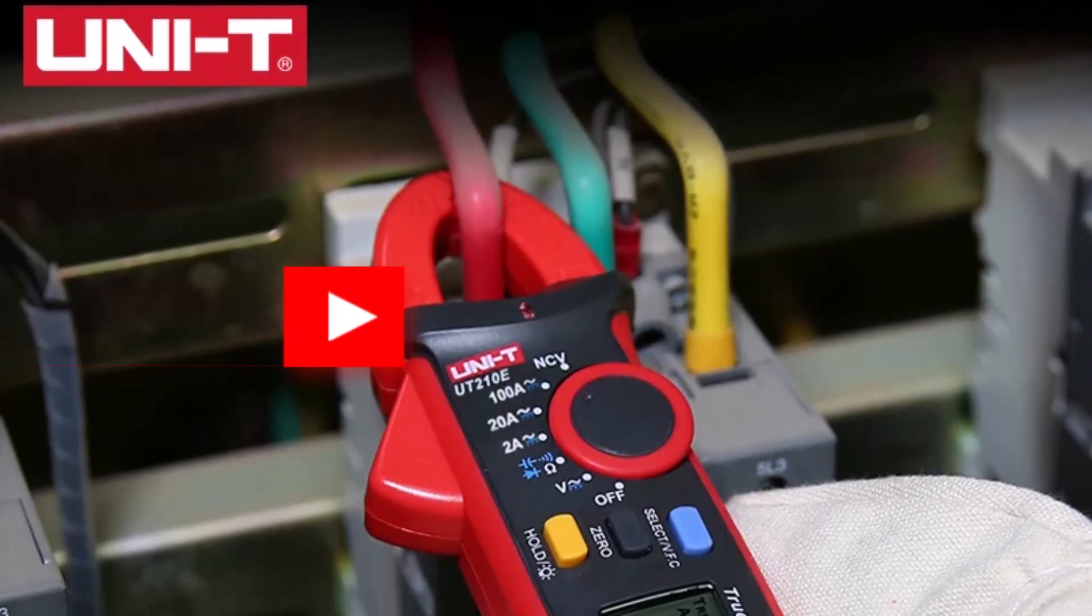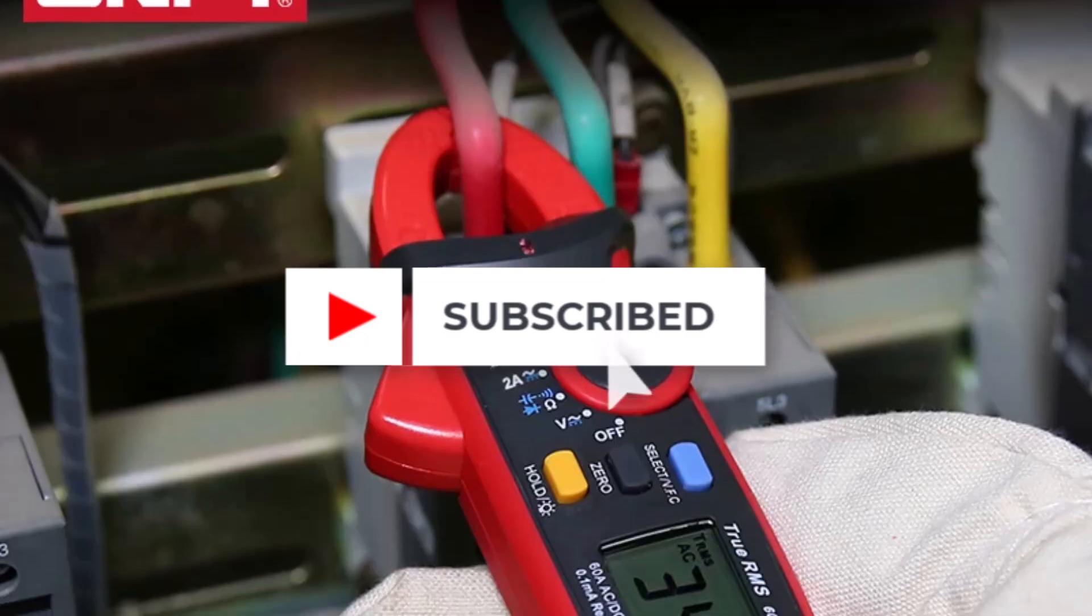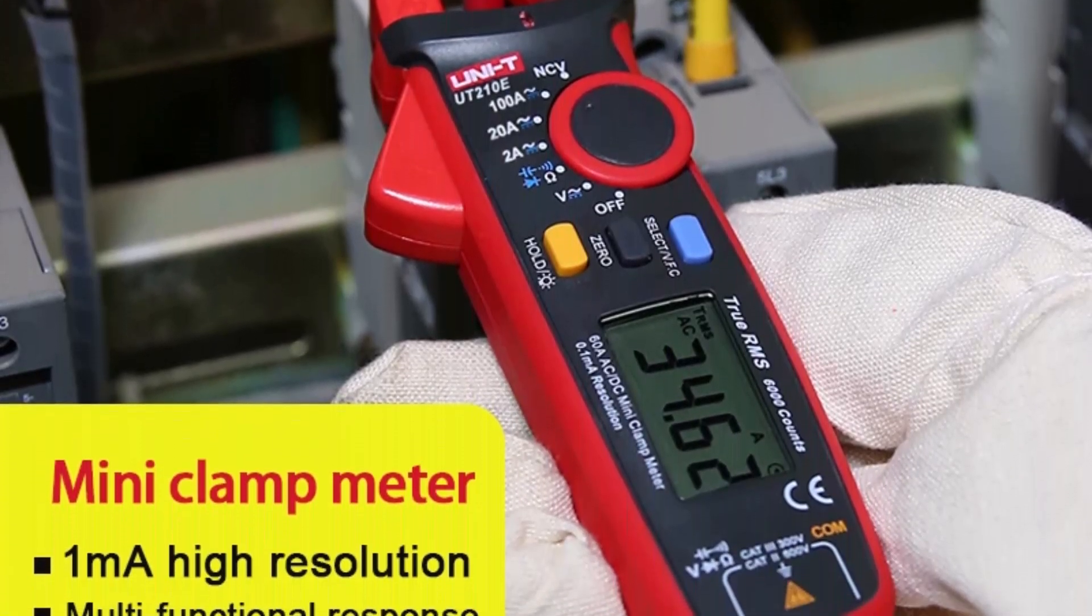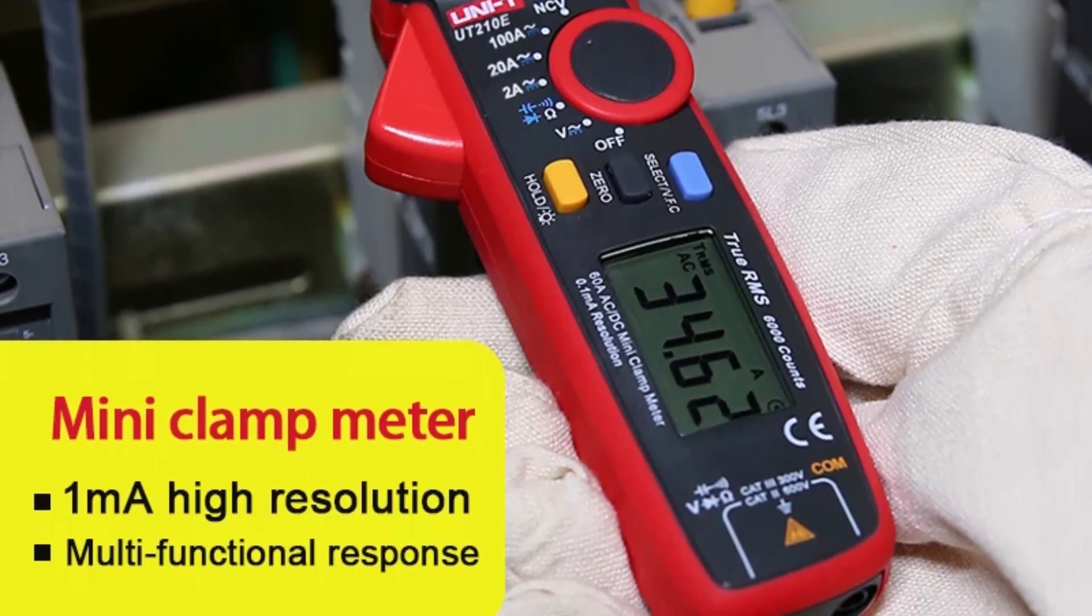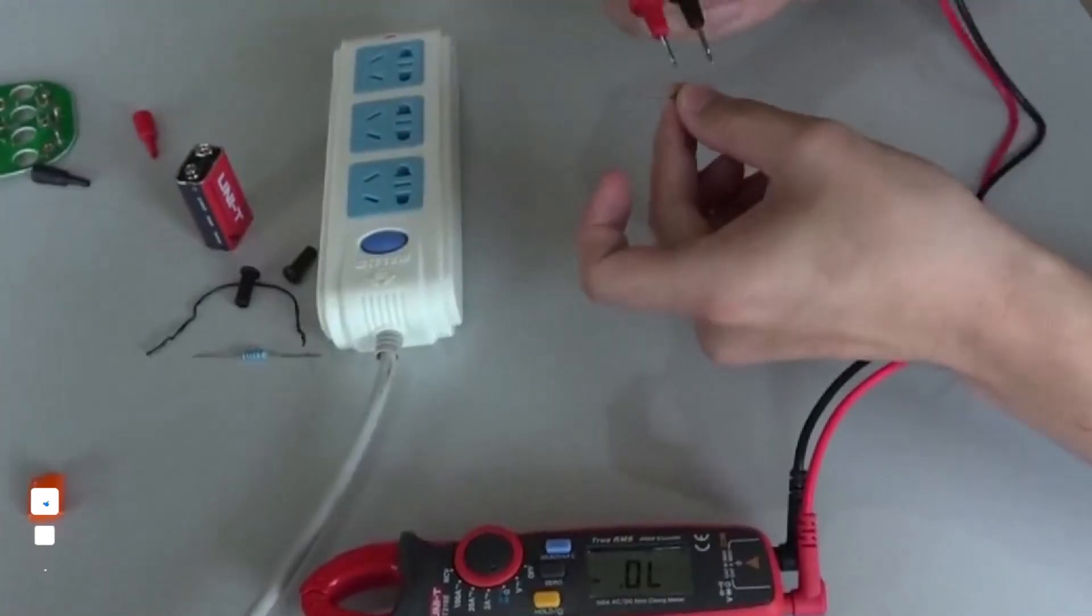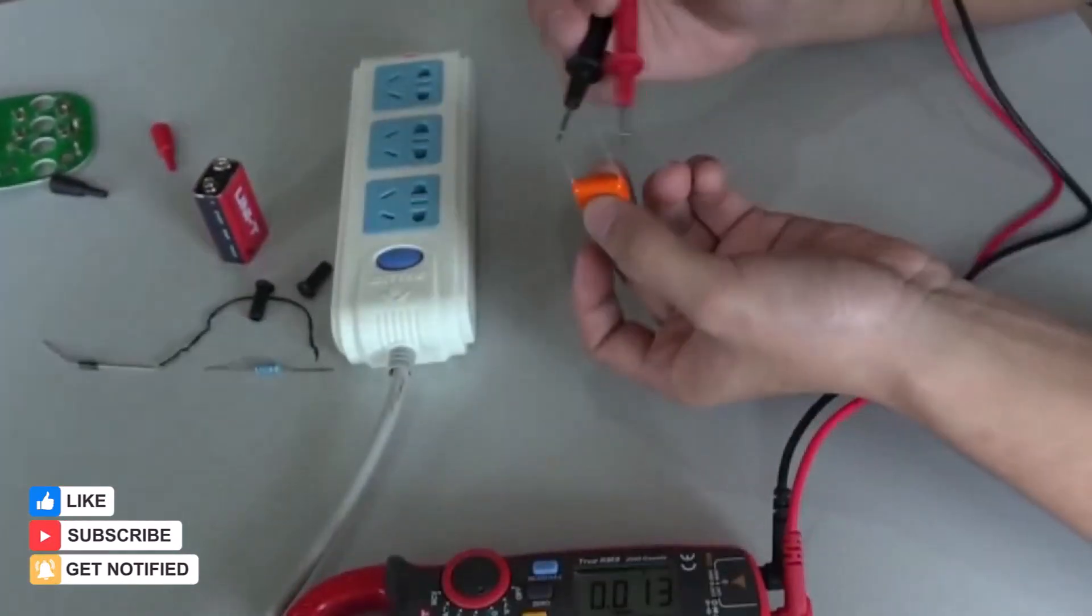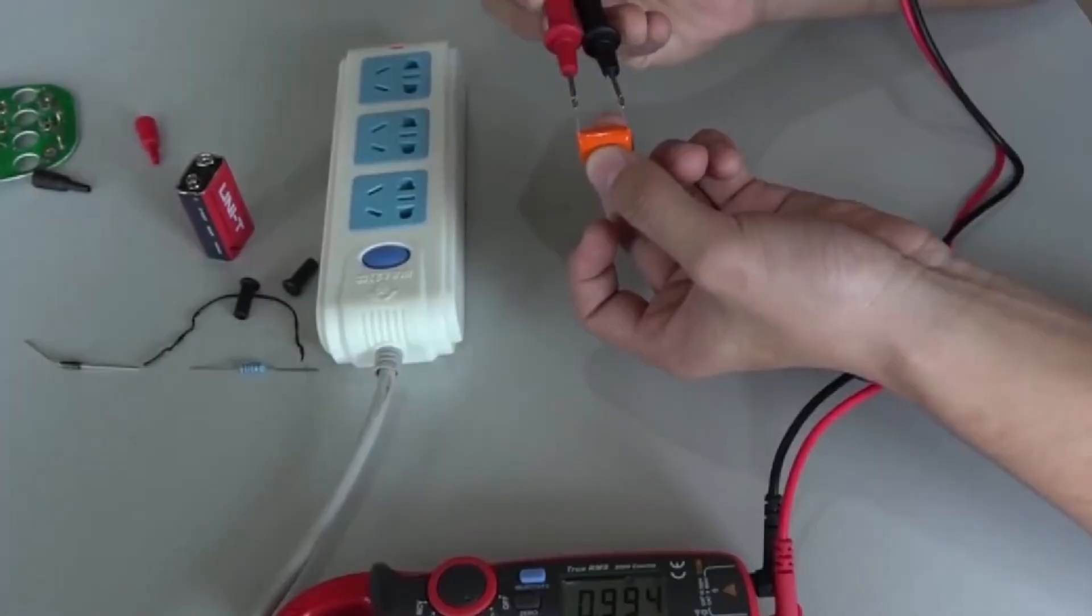As part of the UT-210 series, it brings advanced features like NCV detection, true RMS on UT-210C-D. Whether used for household maintenance or light industrial tasks, the UT-210C delivers dependable performance and essential features at an accessible price point, making it a practical tool for everyday electrical work.